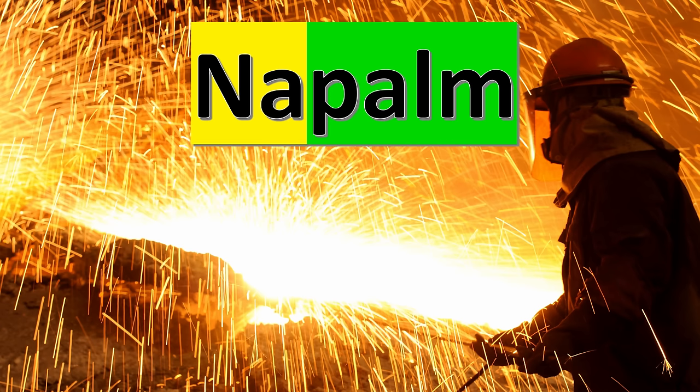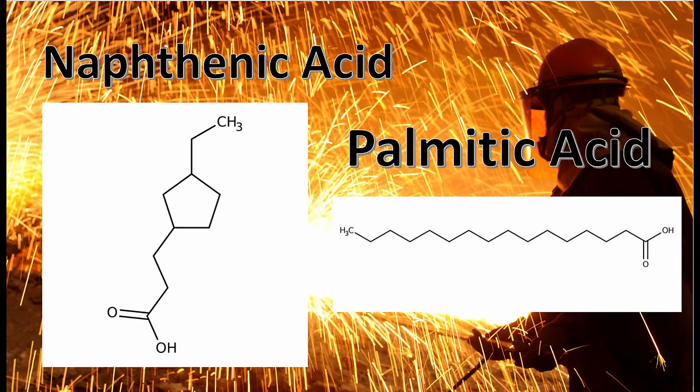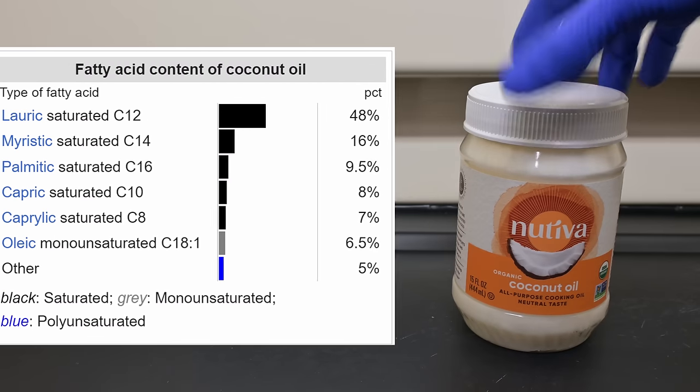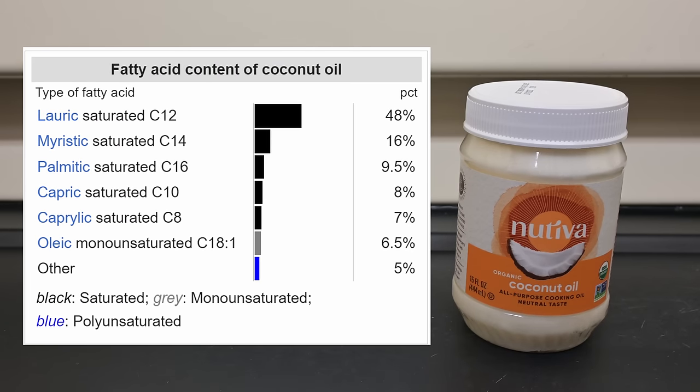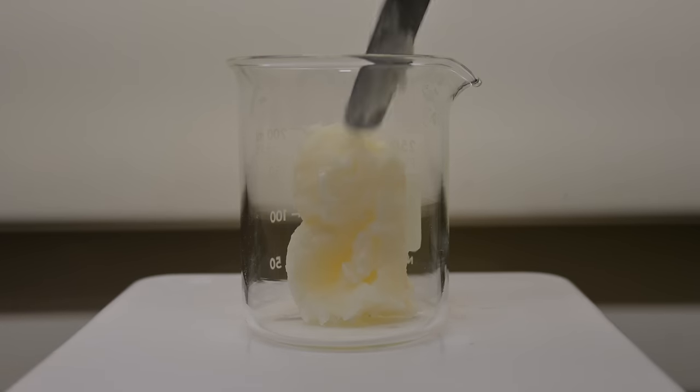Well, the name gives it away. It's a combination of naphthenic acid and palmitic acid. Both of these are just long chains of carbon with a carboxylic acid group attached to them. We can find long carbon chains with carboxylic acids in the cooking aisle at Walmart. Coconut oil is a mix of a bunch of these carbon chains. One such chain is our friend palmitic acid.